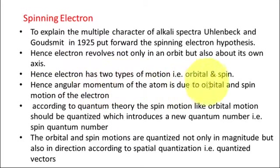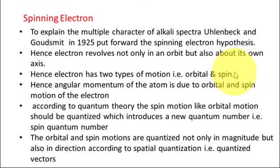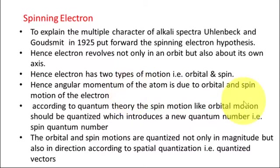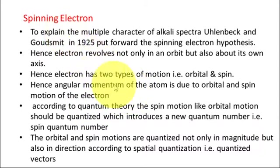Hence, the electron has two types of motion: one is orbital motion — revolving around the nucleus — and the other is spinning around its own axis, that is spin. Therefore, the angular momentum of the atom is not only due to the orbital motion of the electron but also due to spin motion. We thus obtain another quantum number from the spinning electron hypothesis, that is the spin quantum number.